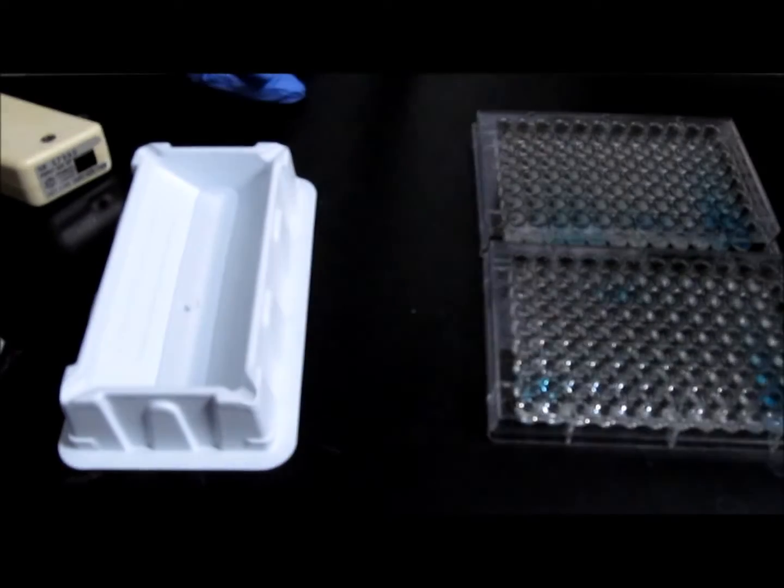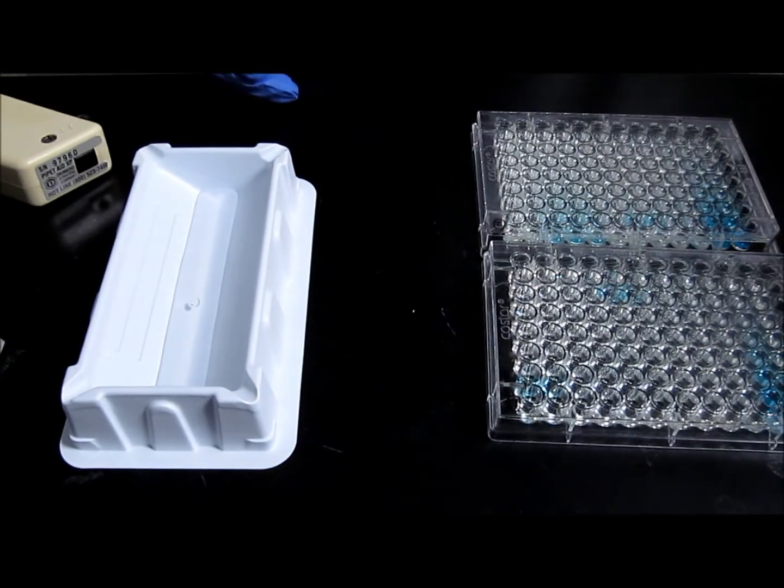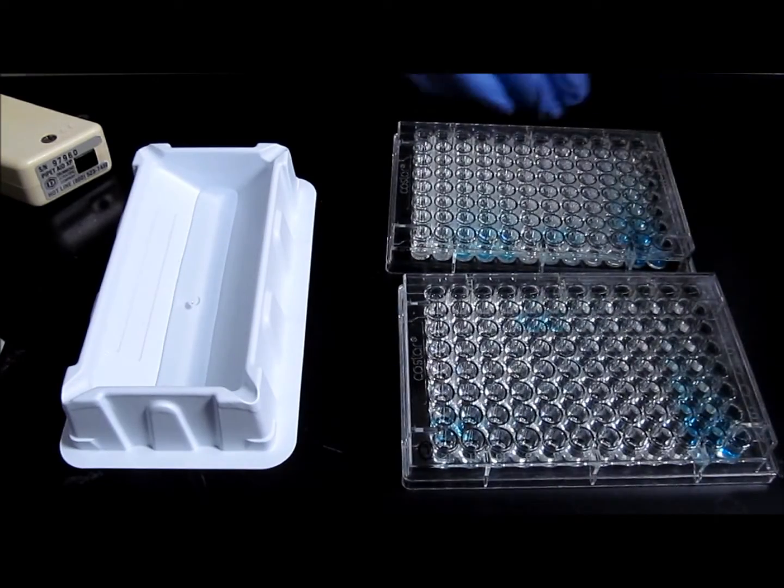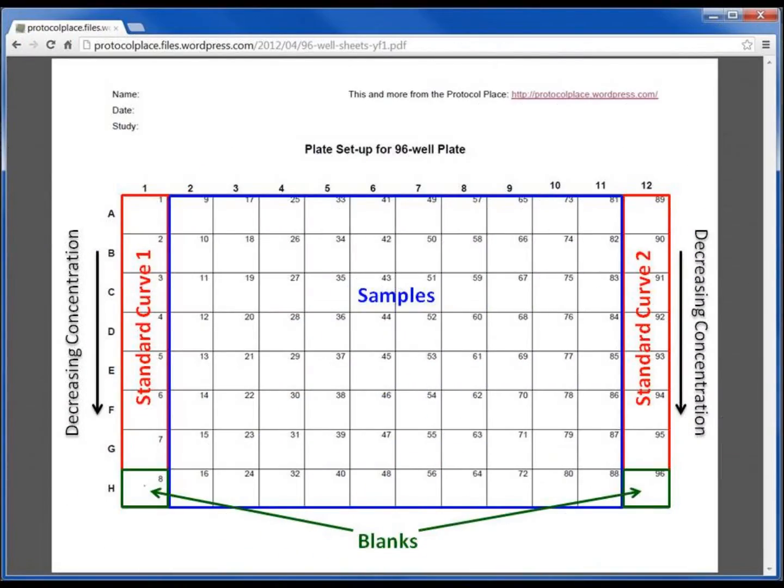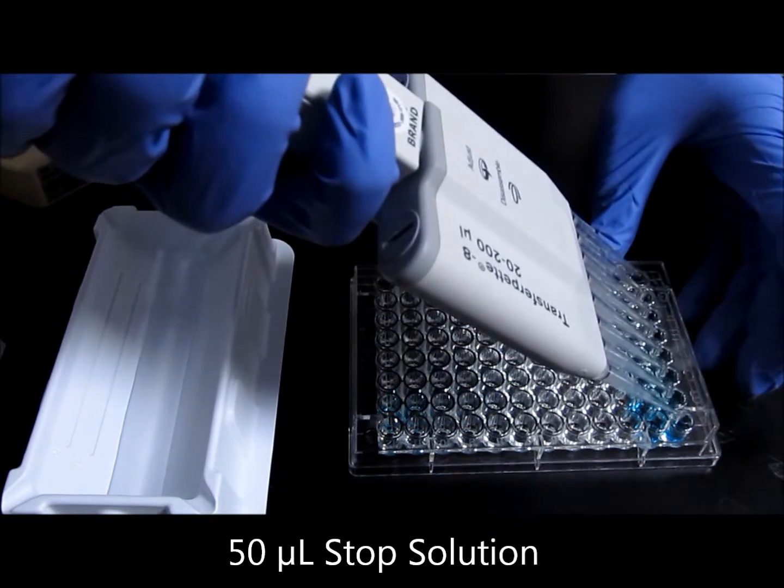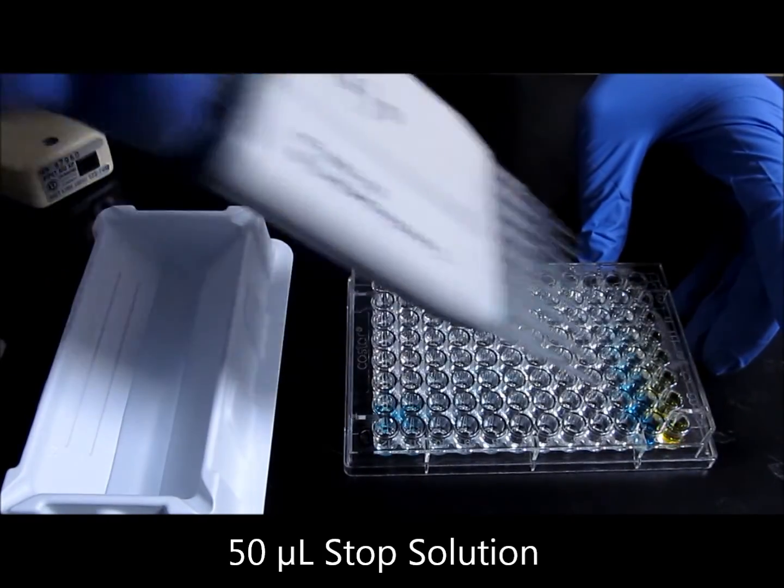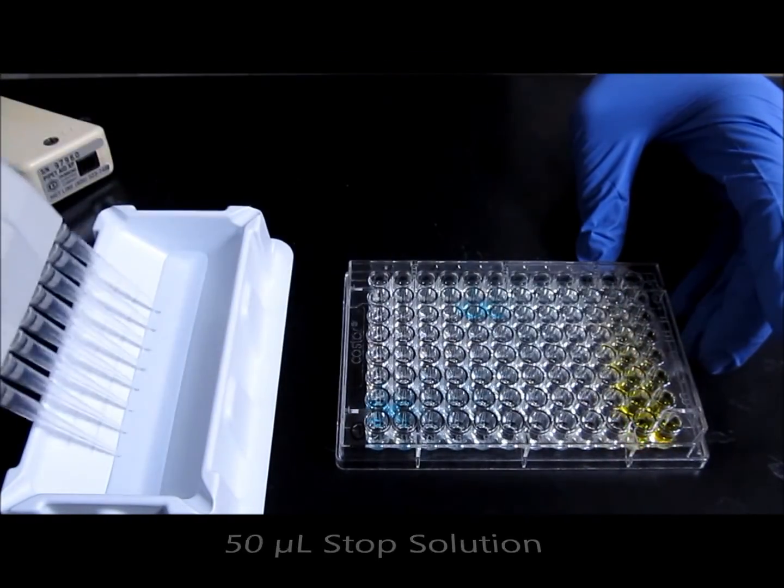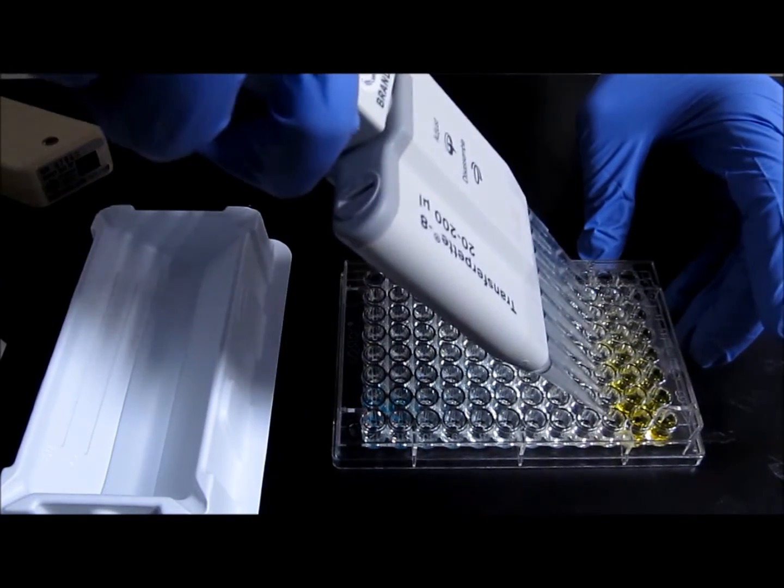The sample should be turning blue at a rate which reflects the amount of protein of interest. If you have prepared a standard curve, the best time to stop the reaction with stop solution is when the most diluted sample in your standard curve has produced a little bit of blue color. When the plate is ready, add 50 microliters of stop solution to each well of the ELISA plate. The blue color should immediately change to yellow as shown here.